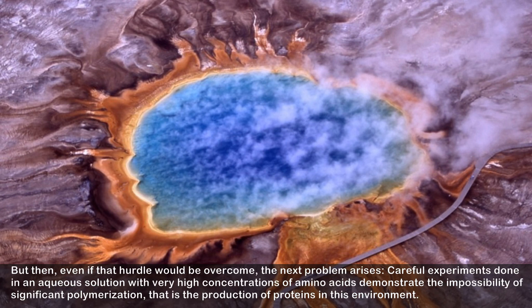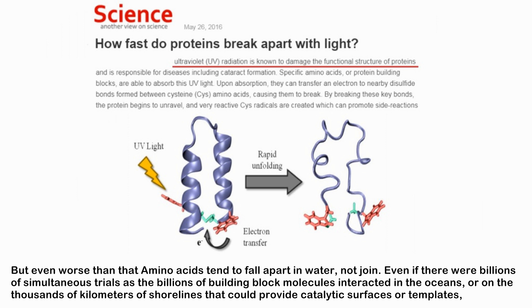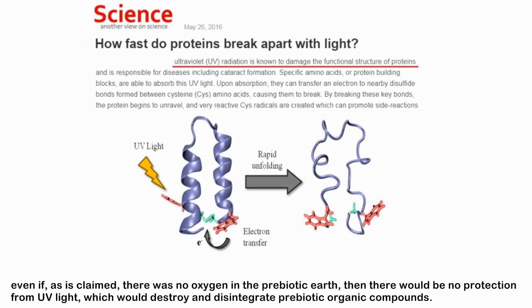Even if that hurdle were overcome, careful experiments with very high concentrations of amino acids demonstrated the impossibility of significant polymerization in aqueous solution. Even worse, amino acids tend to fall apart in water rather than join. Even with billions of simultaneous trials with billions of building block molecules in the oceans or on shorelines providing catalytic surfaces, if there was no oxygen in the prebiotic Earth, there would be no protection from UV light, which would destroy and disintegrate prebiotic organic compounds.